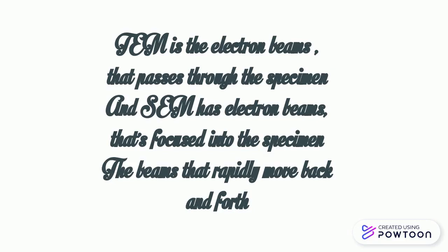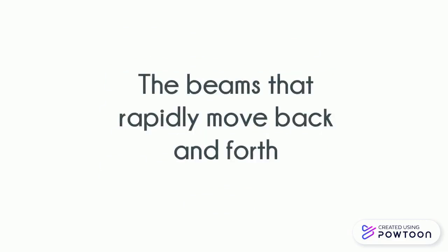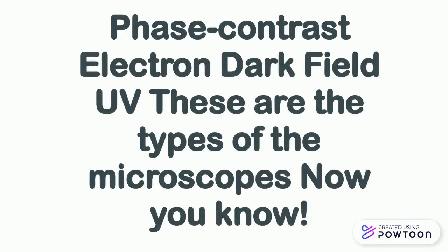SEM, the scanning electron microscope, uses an electron beam that focuses onto the specimen. The beam rapidly moves back and forth across the surface, building up an image using scattered electrons. These are the types of microscopes.